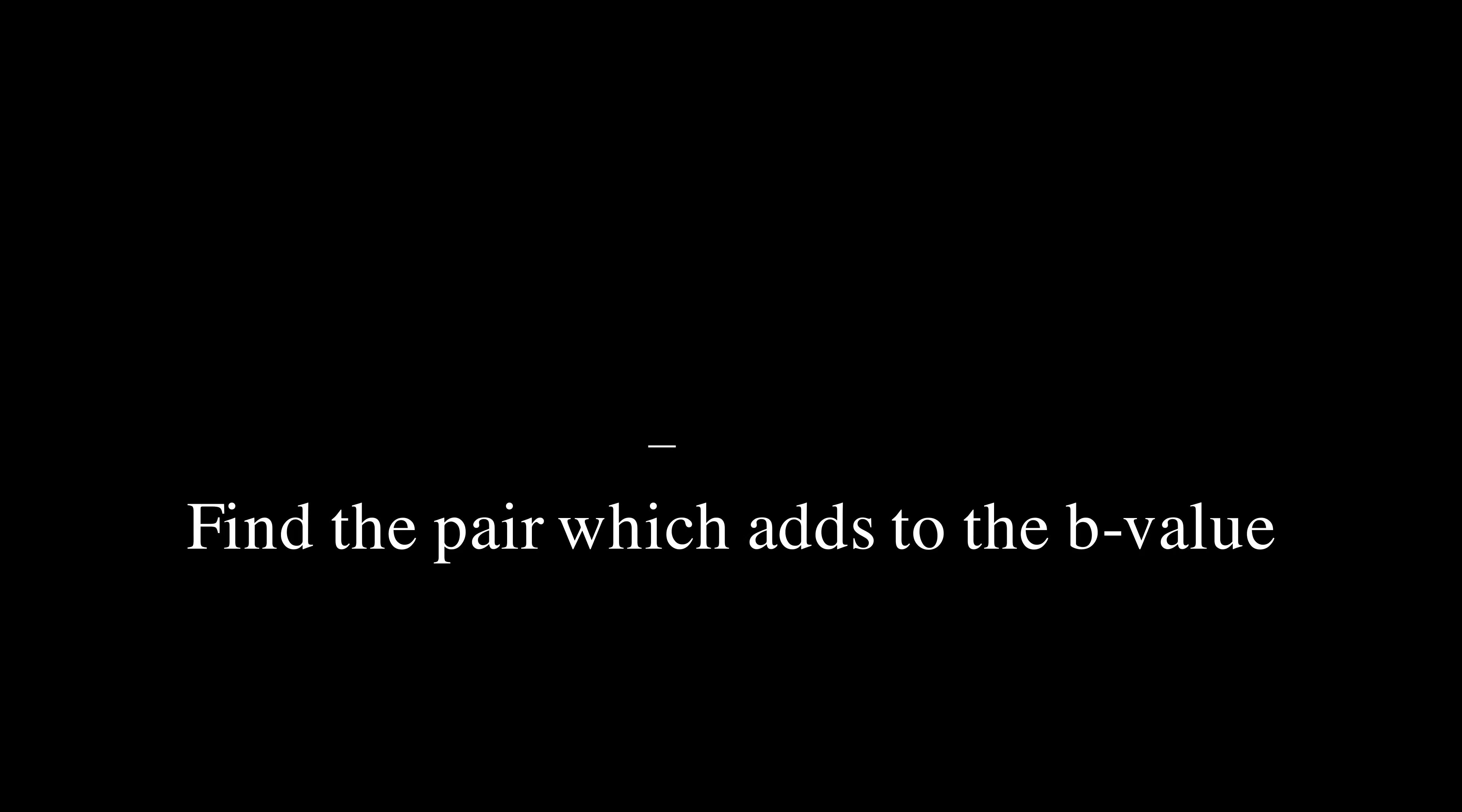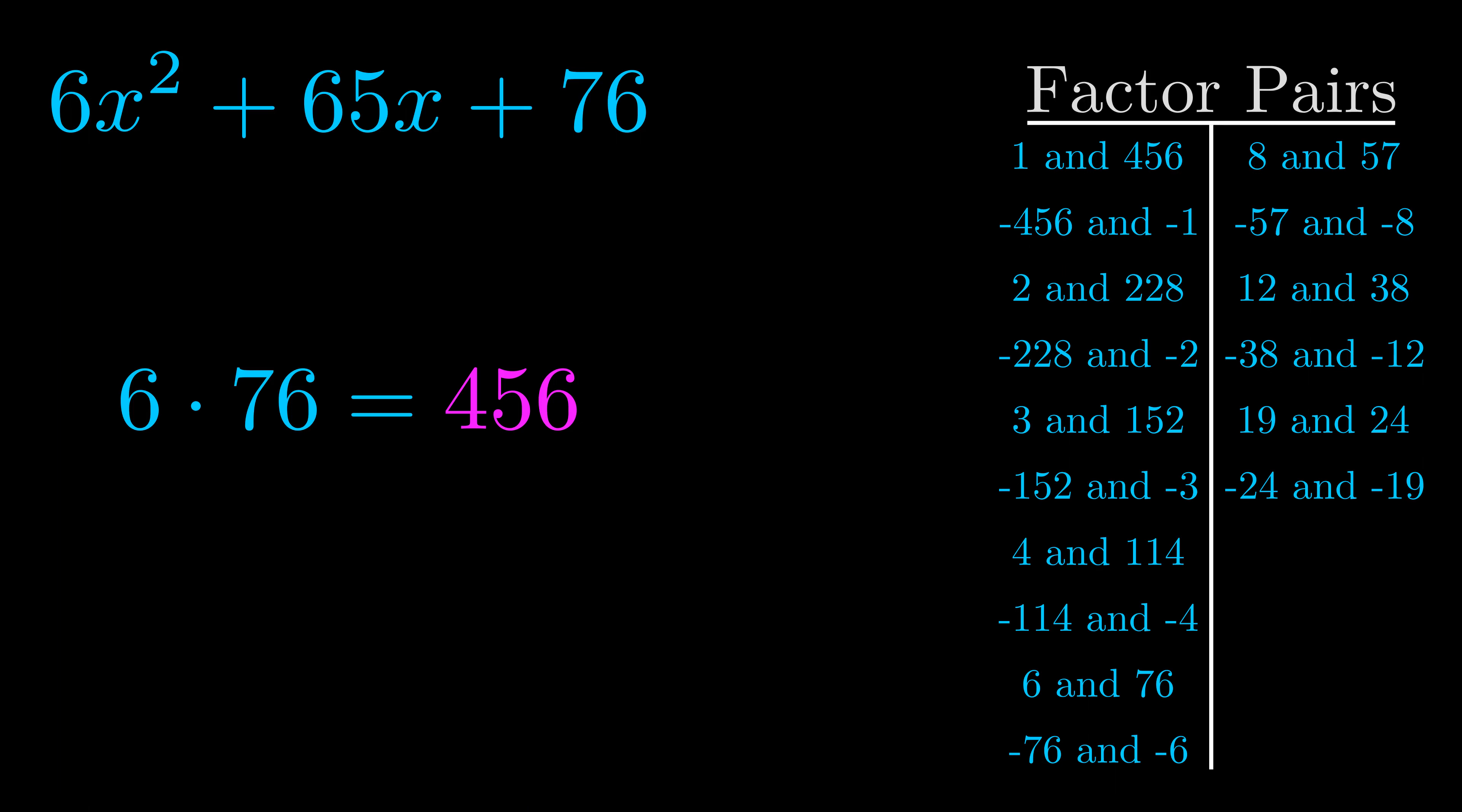The b value is the coefficient on the x term. That's the middle term, the one that we haven't done anything with yet. And really this is the only factor pair that we need.